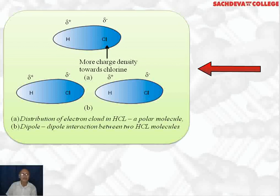This diagram shows dipole-dipole attraction. In HCl, hydrogen is less electronegative and acquires a delta-positive charge, while chlorine is more electronegative and has a delta-negative charge. So electron density is more on chlorine and less on hydrogen, creating a permanent dipole. The Cl (delta negative) of one HCl molecule attracts the H (delta positive) of another HCl molecule. This force of attraction is called dipole-dipole attraction and is stronger than Van der Waals force of attraction because of polarity.